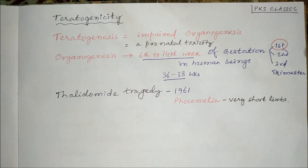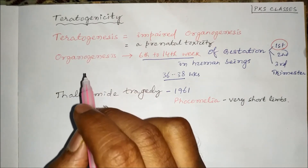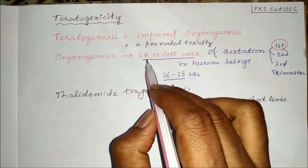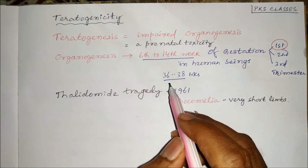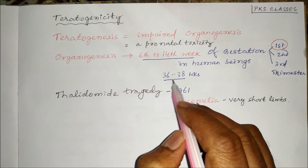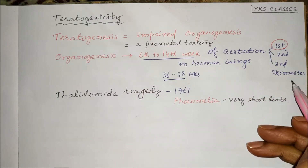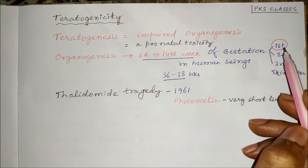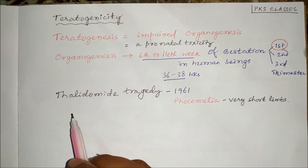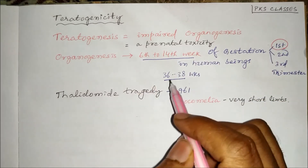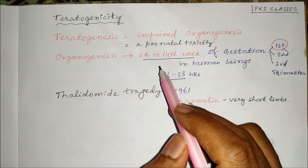Teratogenesis is a prenatal toxicity. The process of organogenesis occurs in human beings during the sixth to fourteenth week of gestation. The total gestation period is nine months, or 36 to 38 weeks. These nine months can be divided into three trimesters — first, second, and third — and the sixth to fourteenth week falls mostly within the first trimester.